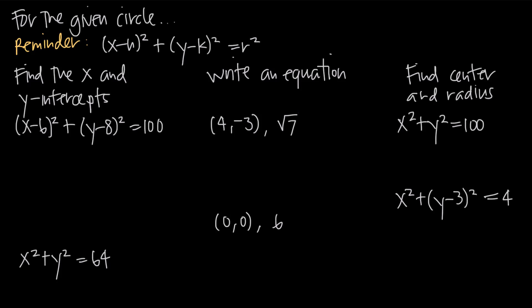In this video, we're going to be talking about the equation of a circle. We always use this formula for the equation of a circle, which is (x minus h) squared plus (y minus k) squared is equal to r squared. In this formula, the point (h, k) represents the center of the circle, and the value r represents the radius of the circle.